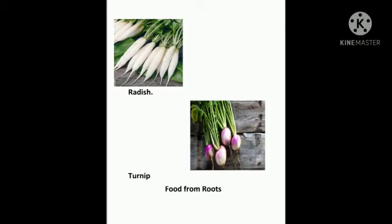Radish and turnip — these foods come from roots. As you know, we get radish and turnip from the roots. So radish and turnip are got from which part of the plant? Roots.